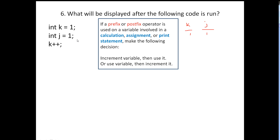Our first line of code that's going to affect the memory location is this one. We have a postfix increment operator. Here's the point: if a prefix or postfix increment operator is used on a variable involved in a calculation, an assignment, or a print statement, you've got to make a decision. However, there is no calculation, no assignment operator, and it's not in a print statement here, so we can just do the incrementing and not worry about anything.